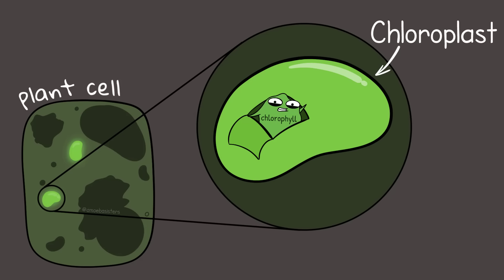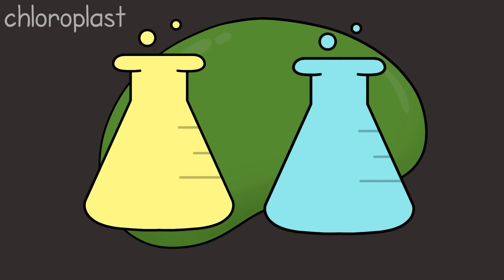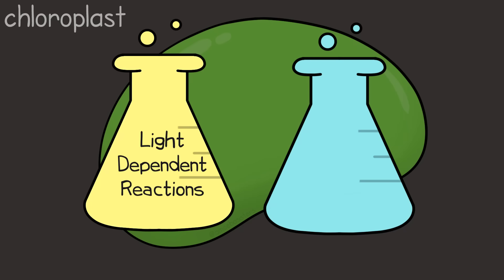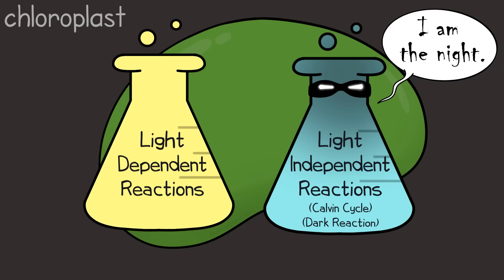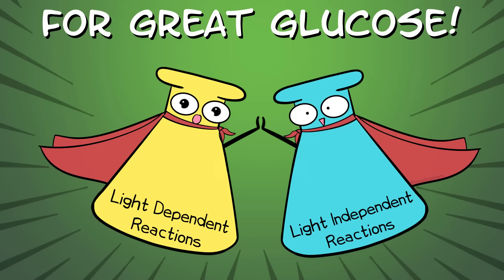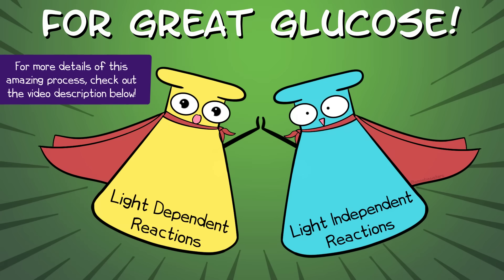Chlorophyll is a pigment that can be found in the chloroplast of plant cells. There are two major processes that occur in the chloroplast that together make up photosynthesis. They are the light-dependent reactions and the light-independent reactions. The light-independent reactions can also be called the Calvin cycle or, even less commonly, the dark reaction. We're going to talk about both of these briefly. Like most of our videos, this is pretty general—we've got some further reading links in the video description where you can explore a lot more detail.